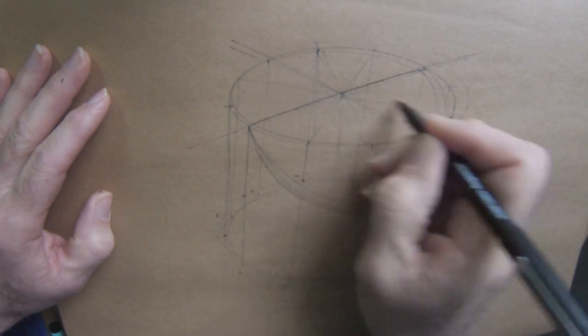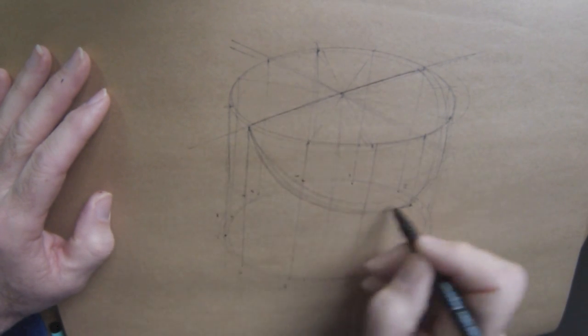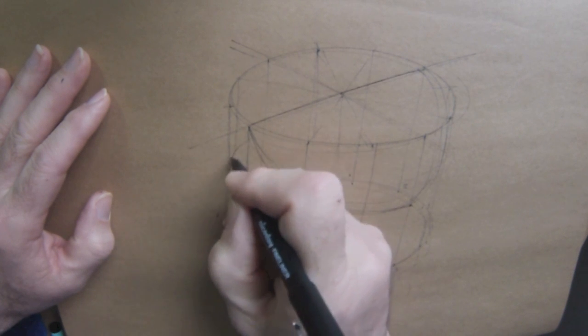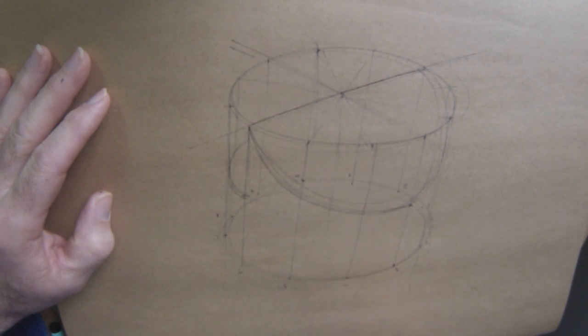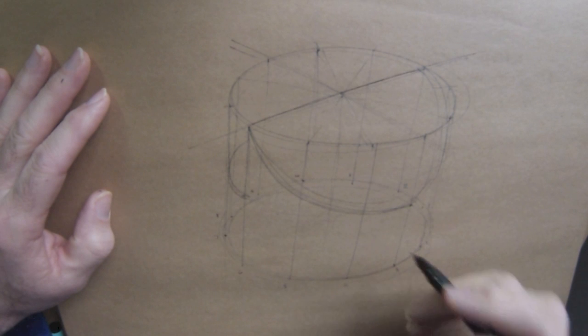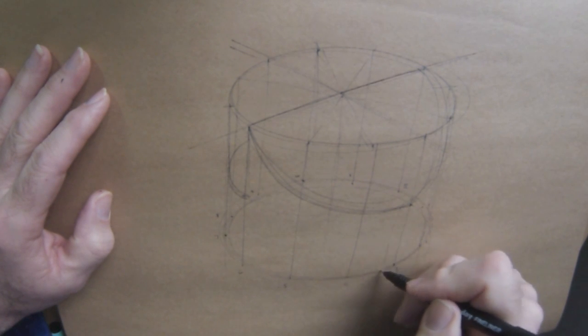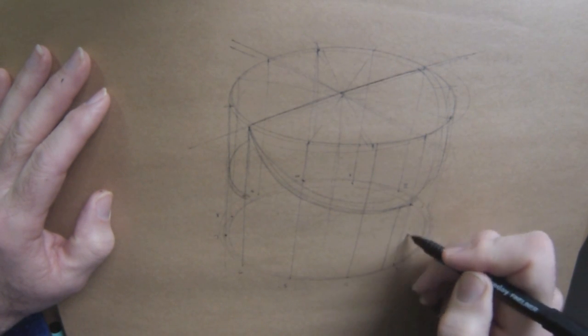And the back edge will be stepped down with a horizontal surface. So an ellipse around here somewhere would give me that back edge. Remember, the lower the ellipse, the bigger the minor axis, the chunkier, the fatter it looks.